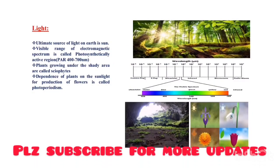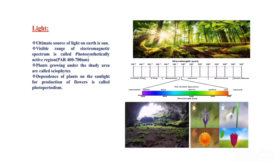Light: the ultimate source of light on earth is the sun. The visible range of the electromagnetic spectrum, that is around 400 nanometers to 700 nanometers, is called the photosynthetically active region, because plants utilize this visible range of light for their photosynthetic process. Only this range of light is required for photosynthesis to take place.